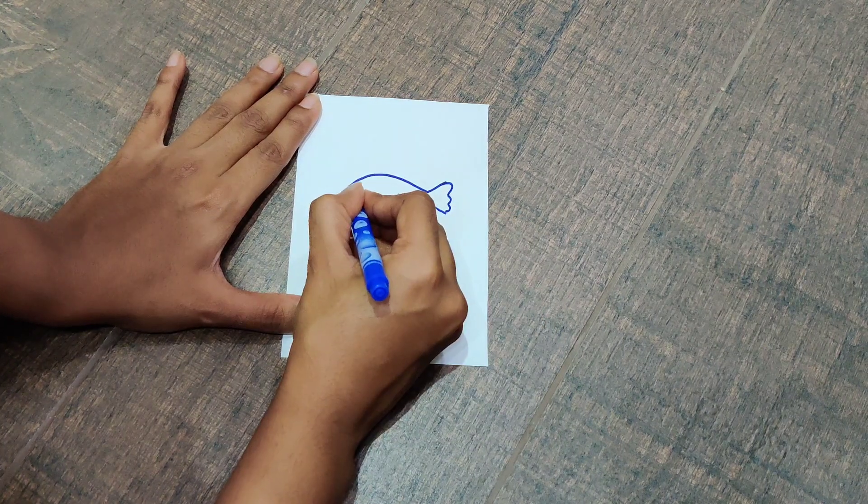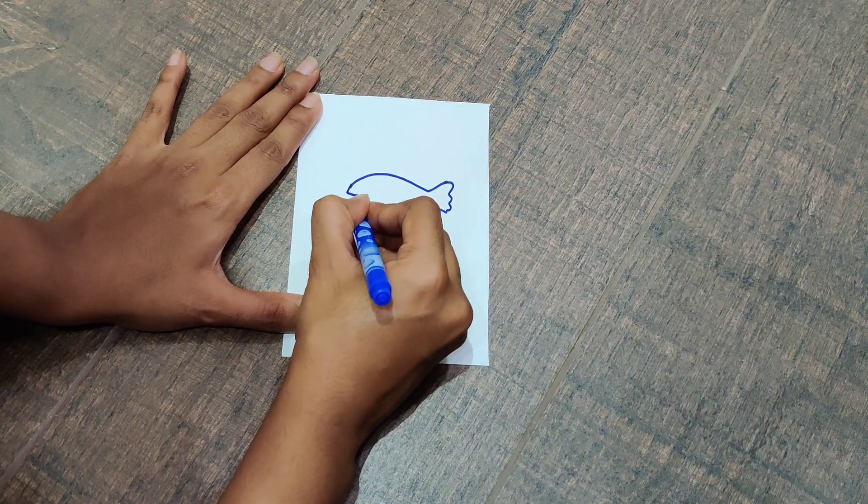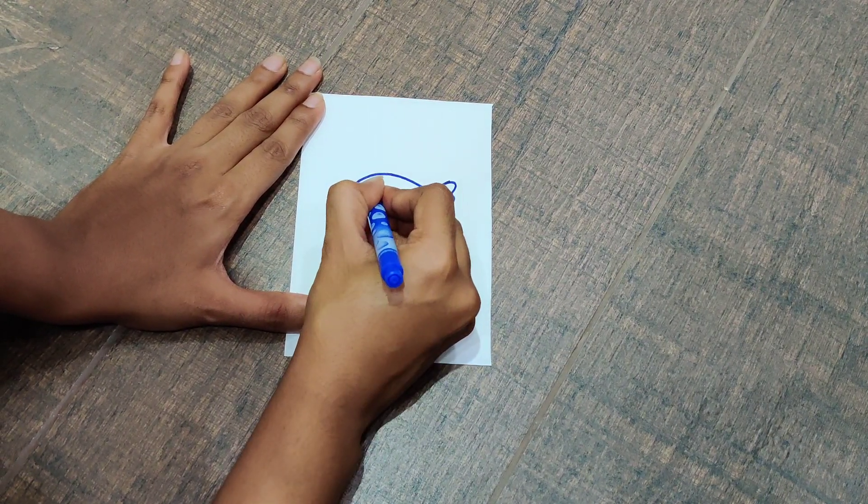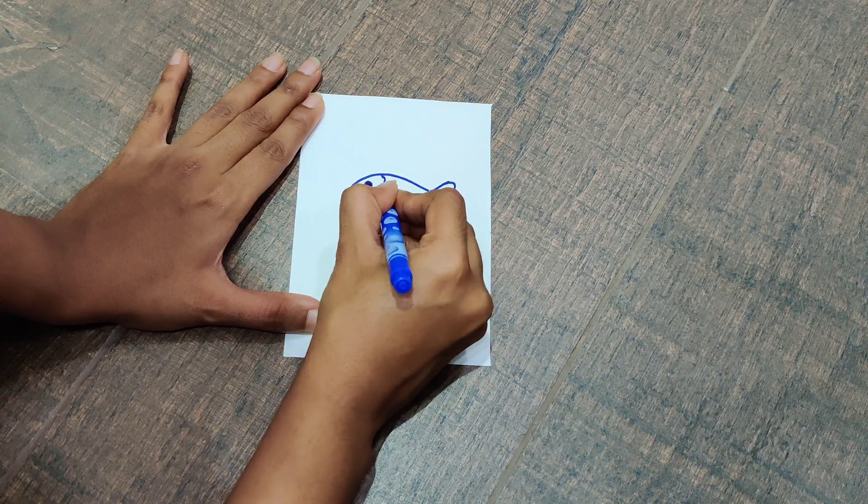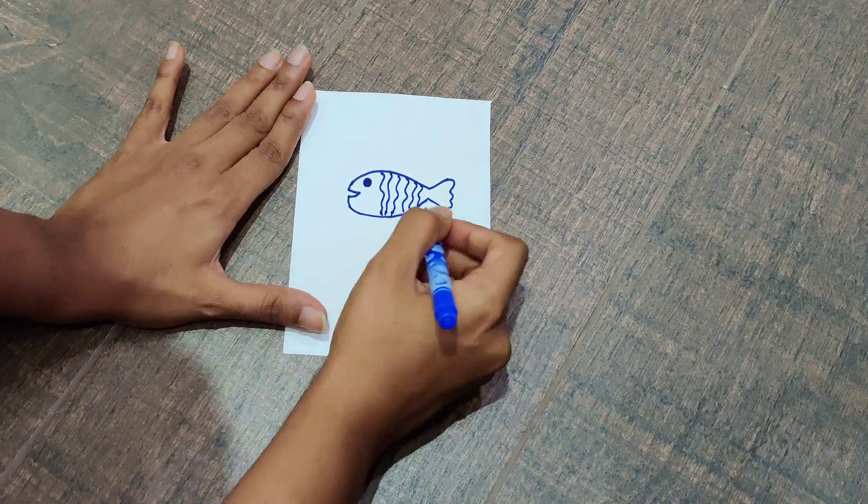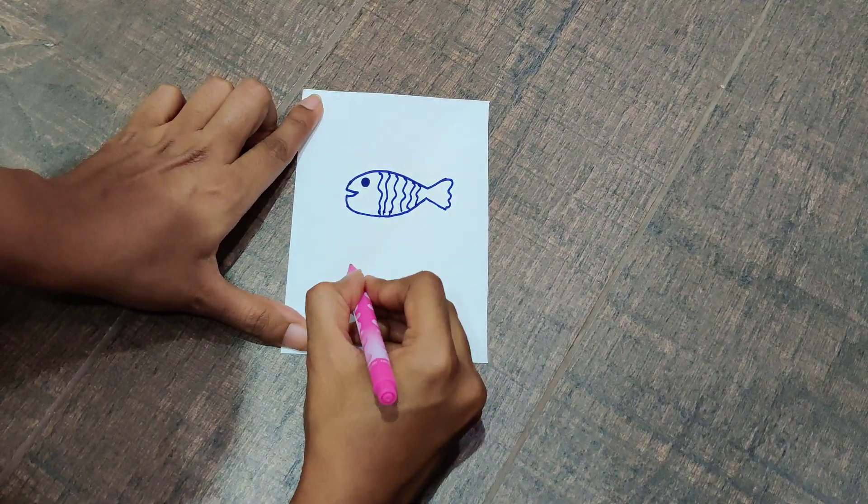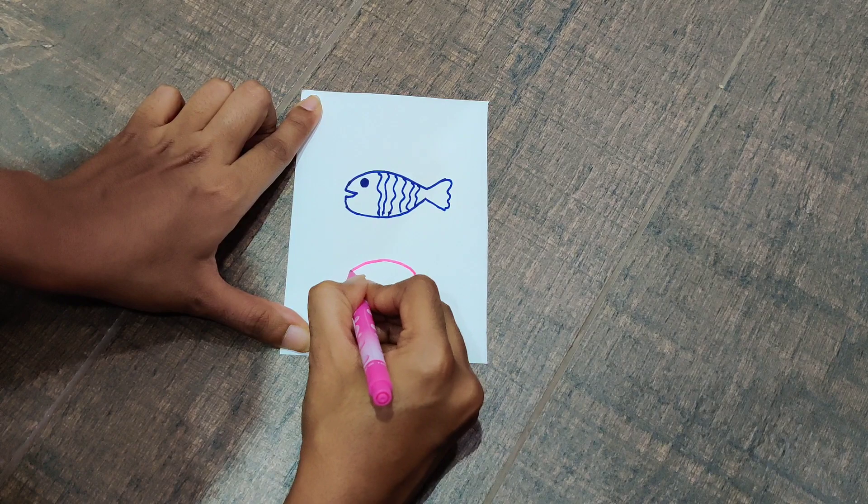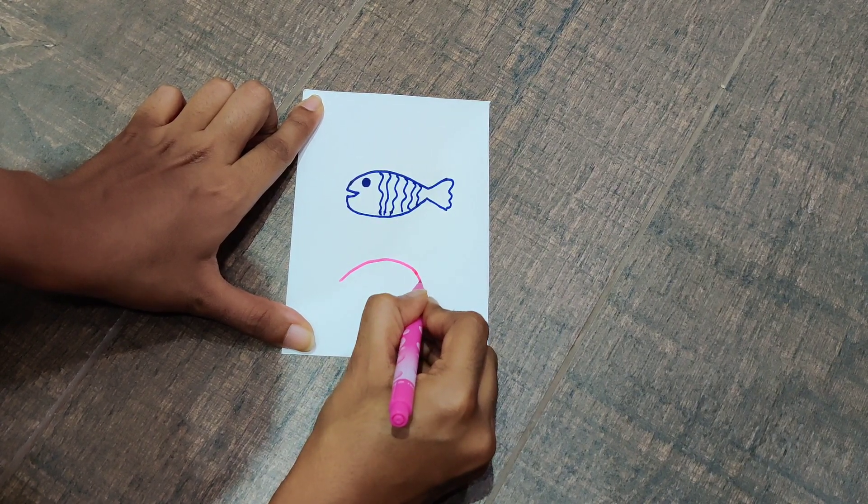Draw with a pencil first, then trace with a sketch pen. Now I'm going to draw the fishes looking and moving in different directions.